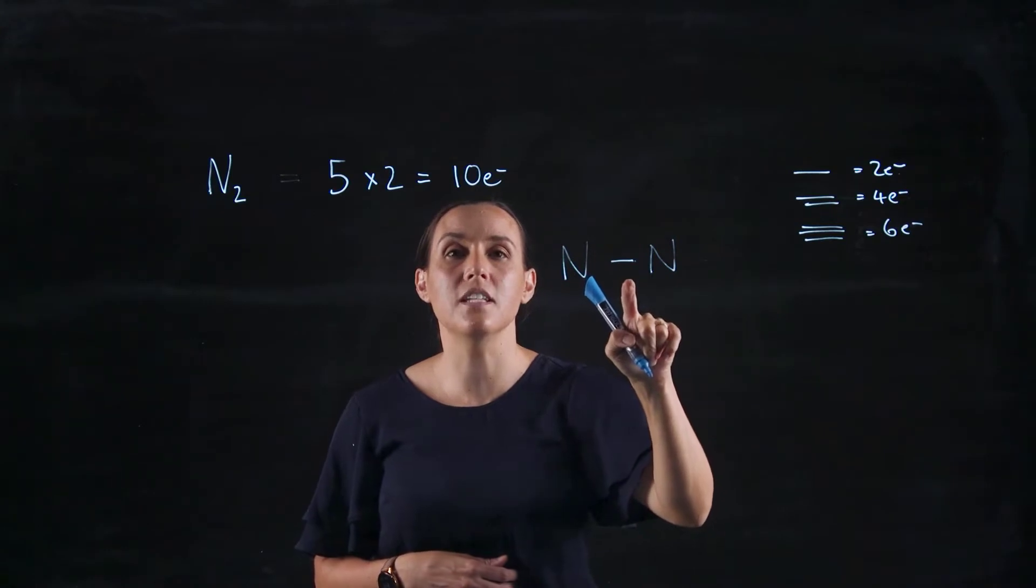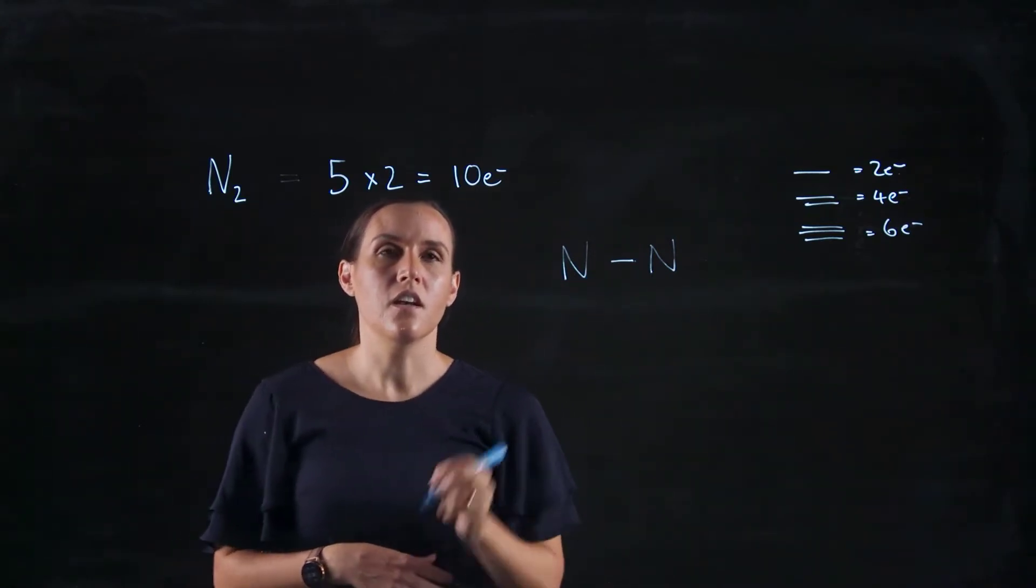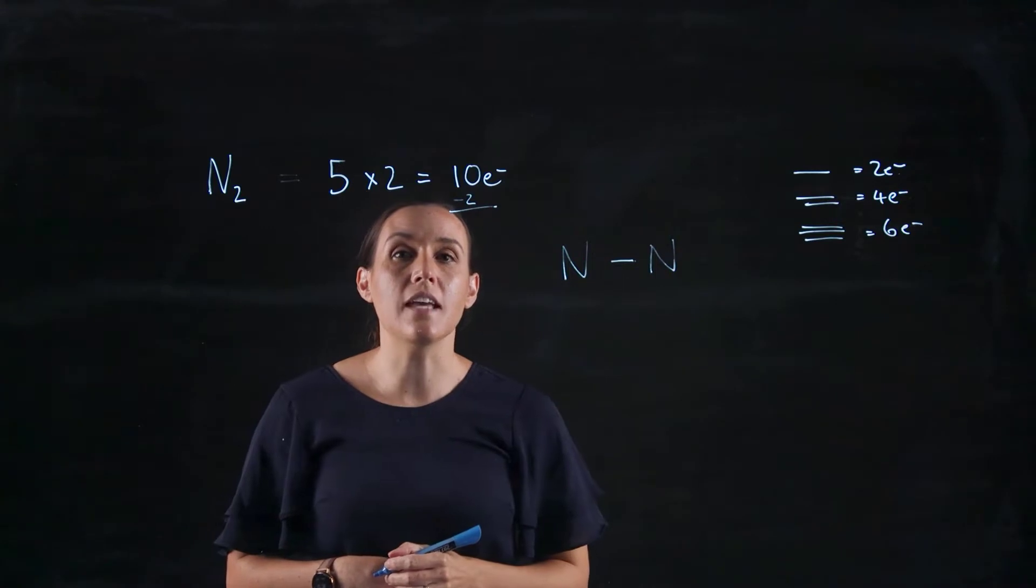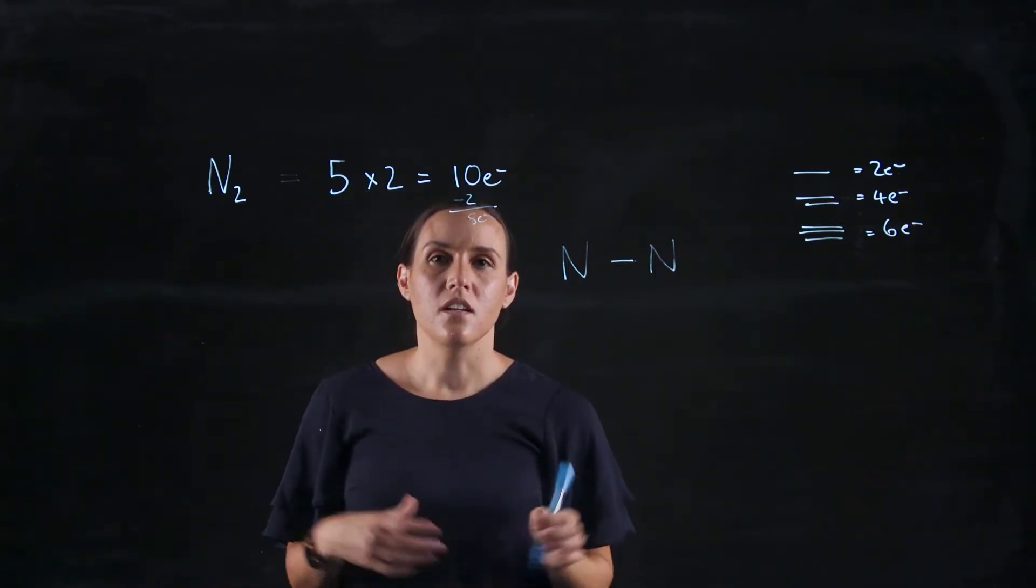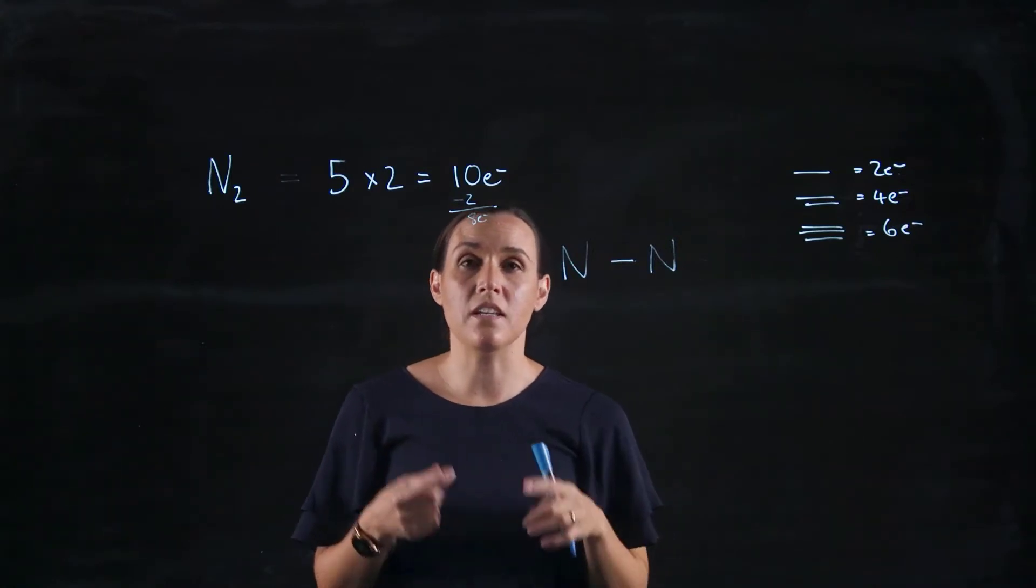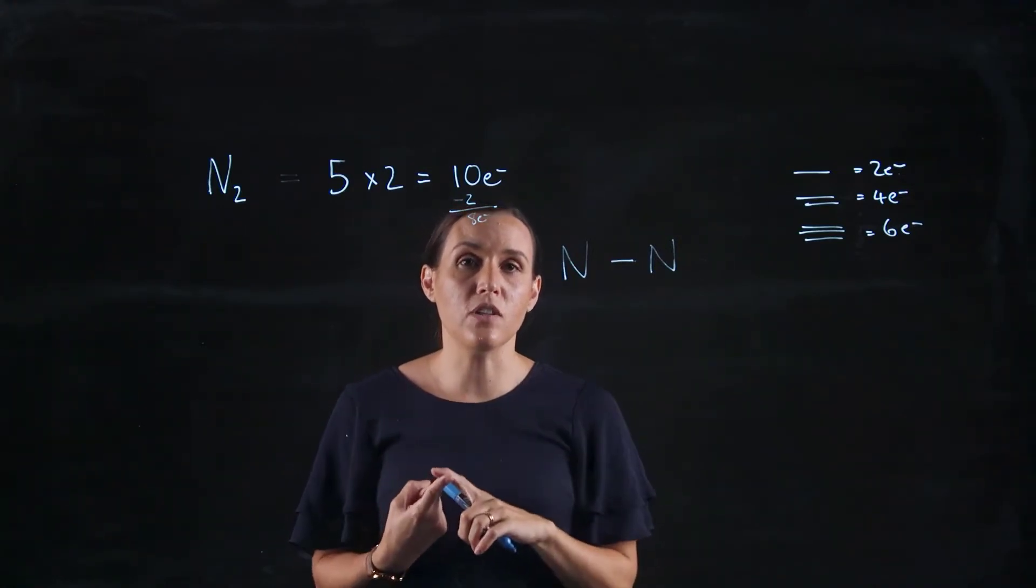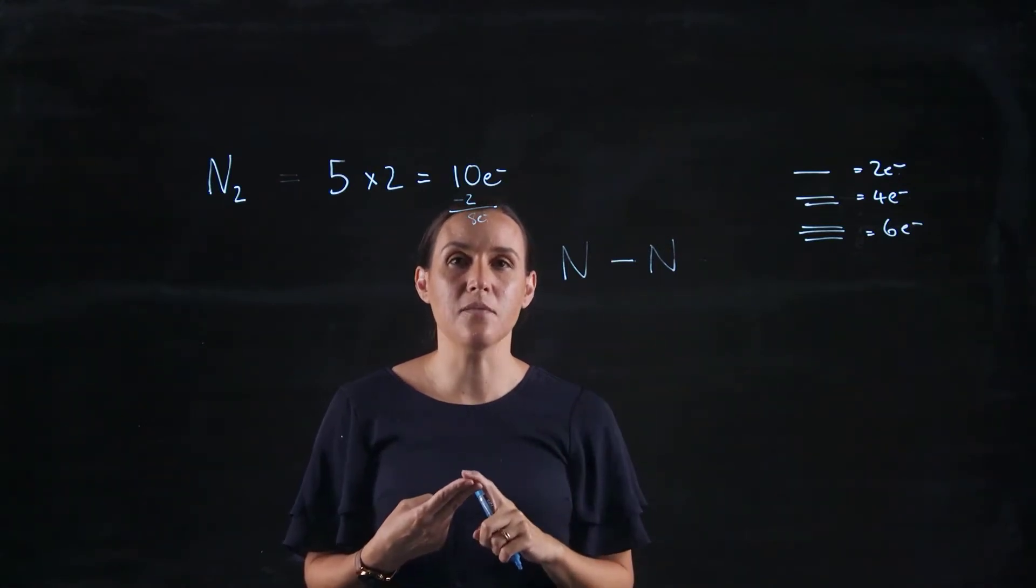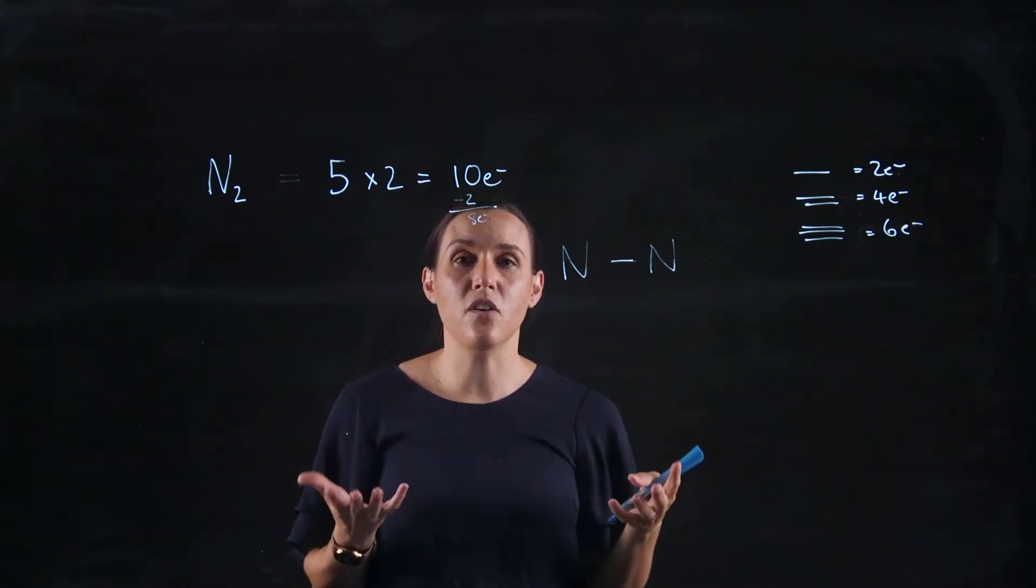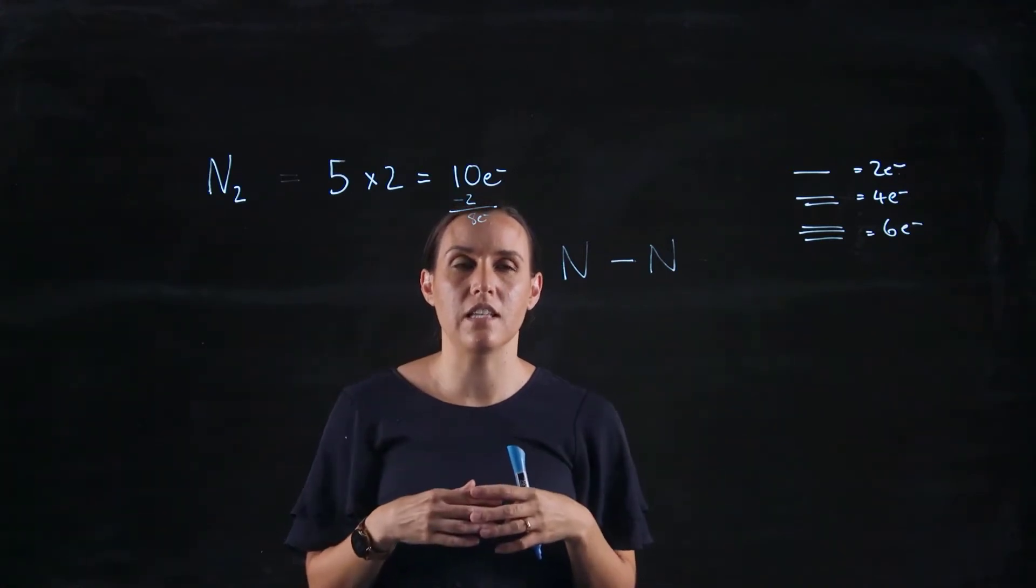So we've got a single bond here, so that's two electrons. So if I take that from my total, so ten minus two would give me eight electrons left over. So the next way to do it would be, so firstly, you work out your total electrons, you write a single bond between the connecting atoms, and then you fill the outside atoms first, and then you work your way to the inside.